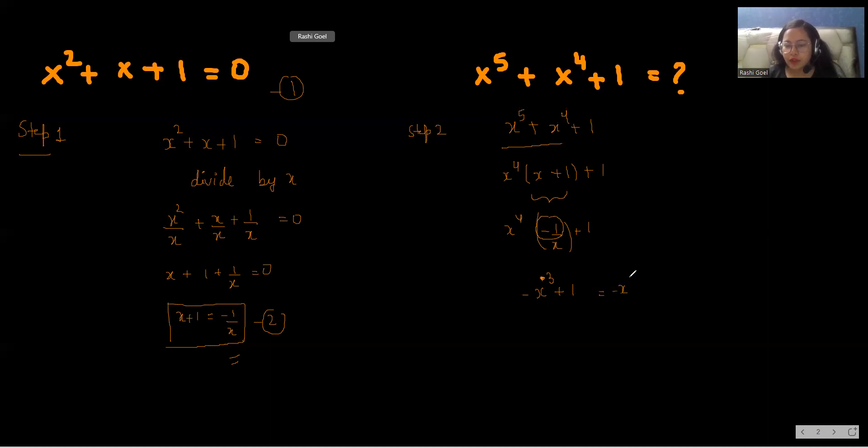After dividing power 4 with 1 we get minus x power 3 plus 1, or you can write it as 1 minus x power 3. So we know about the formula a cube minus b cube, that is a minus b times a square plus ab plus b square.